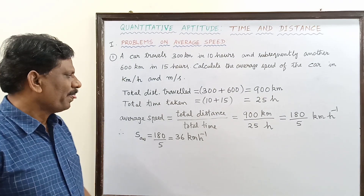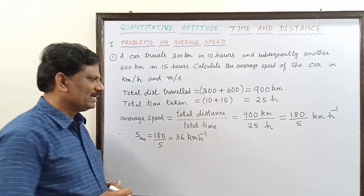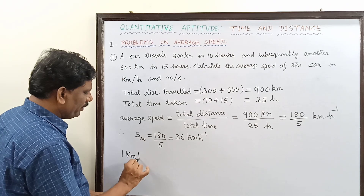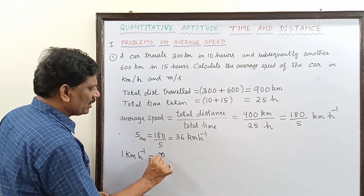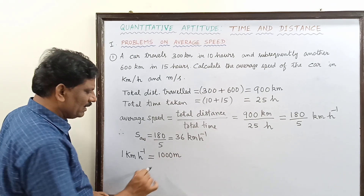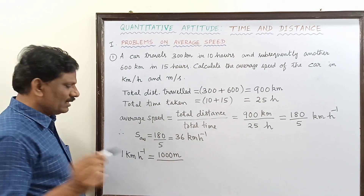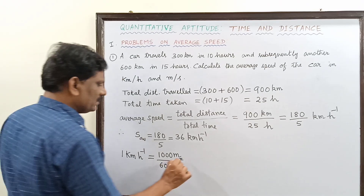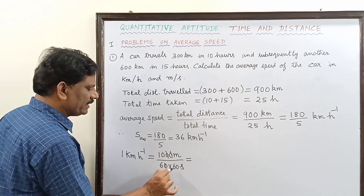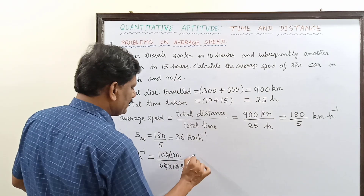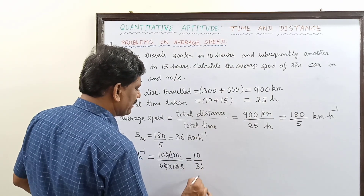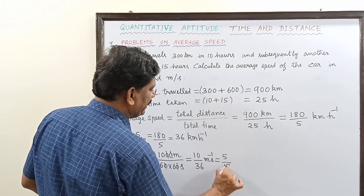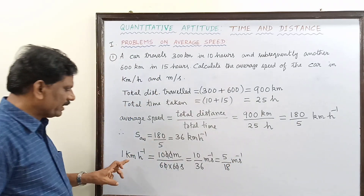But the SI unit is meter per second. So, 1 kilometer per hour is equal to what? 1 kilometer is 1000 meters, divided by 1 hour which is 60 minutes, and 1 hour is 60 into 60 seconds. So after cancellation of zeros, this is equal to 10 divided by 36 meter per second, which is also equal to 5 by 18 meter per second.